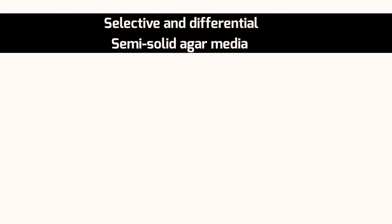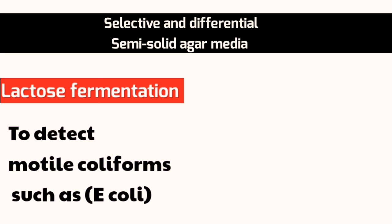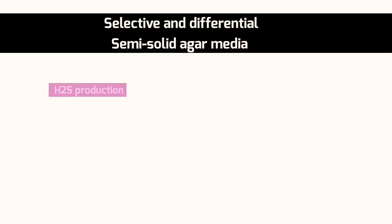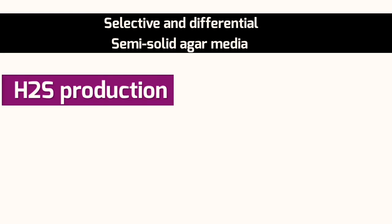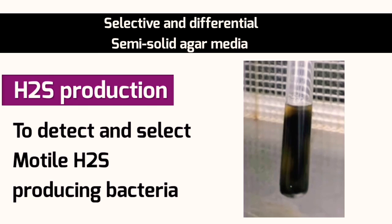Some differential semi-solid agar media can also be used. For example, we can add lactose and phenol red indicator to detect motile lactose-fermenting Enterobacteriaceae by the hazy growth of red color, such as E. coli. We can also use semi-solid agar media containing sulfide to detect motile hydrogen sulfide-producing bacteria, recognized by the hazy growth of black color, such as Salmonella.